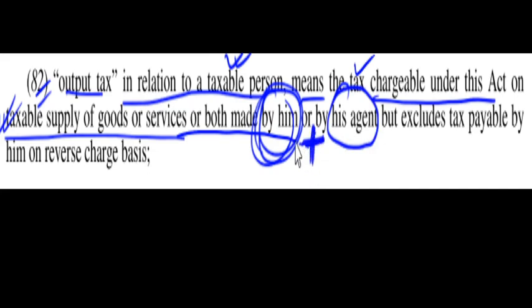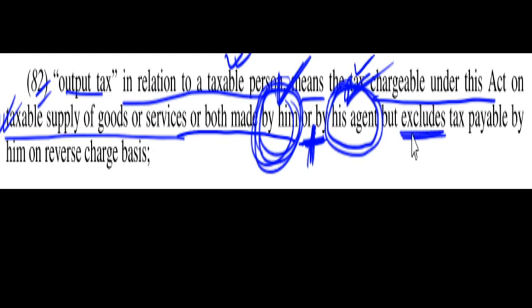So output tax will be the sum of tax payable on supplies made by him and tax payable on supplies made by his agent. However, output tax excludes tax payable by him on reverse charge basis.